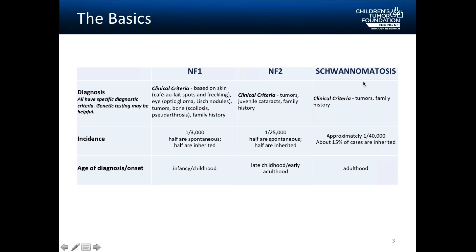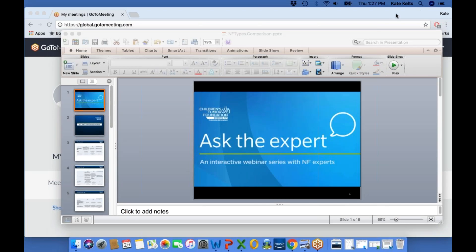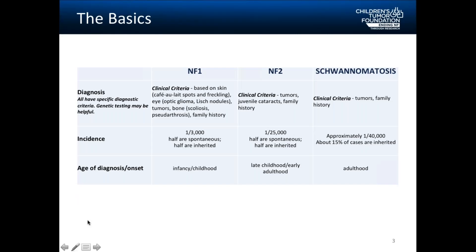In NF2, diagnosis is most often made based on the criteria of various types of tumors, juvenile cataracts, or a family history. In schwannomatosis, clinical criteria includes types of tumors and a family history.